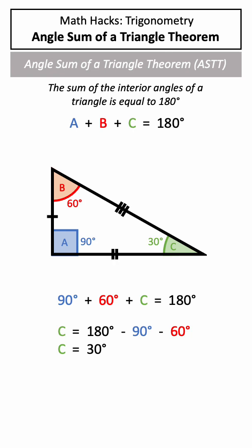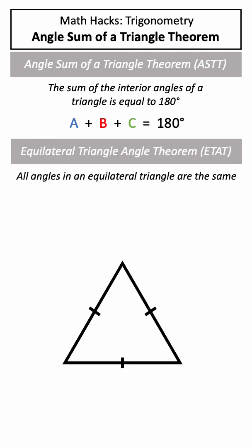Now this is a scalene triangle, but there are some other tricks for equilateral and isosceles triangles. In an equilateral triangle, all angles are the same, so we can write the angle sum theorem in a simplified way, and know that each angle would have to be 60 degrees.